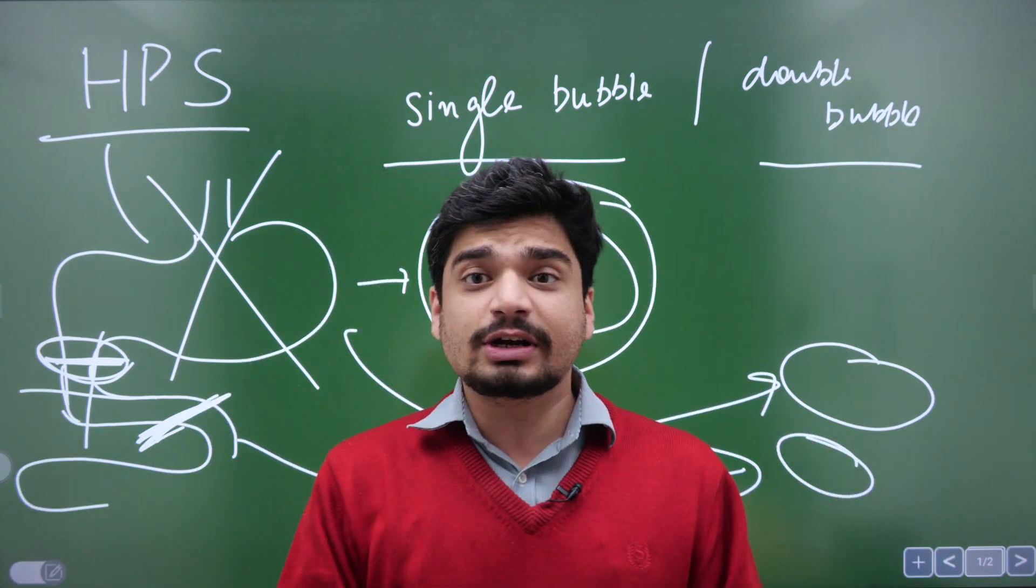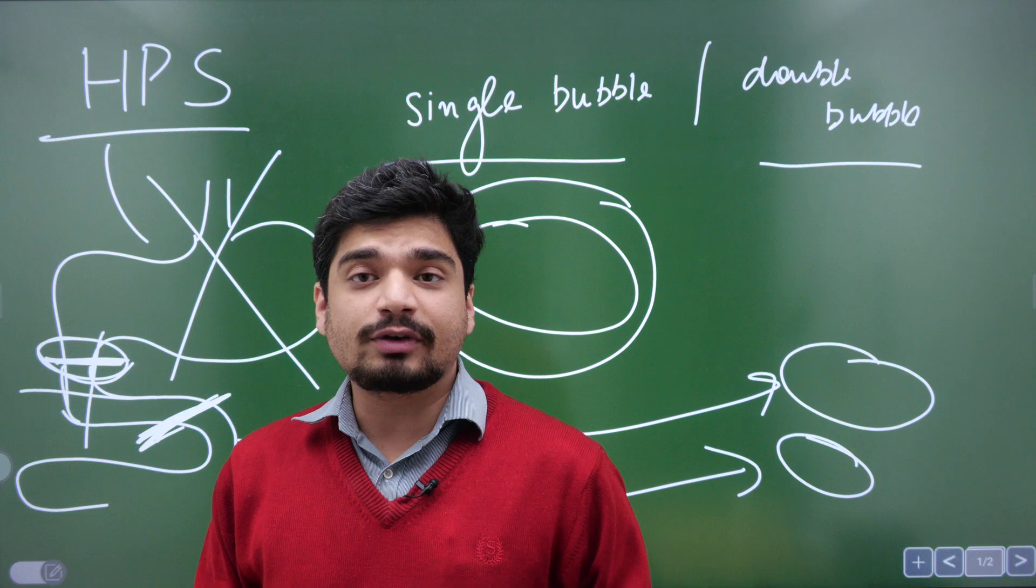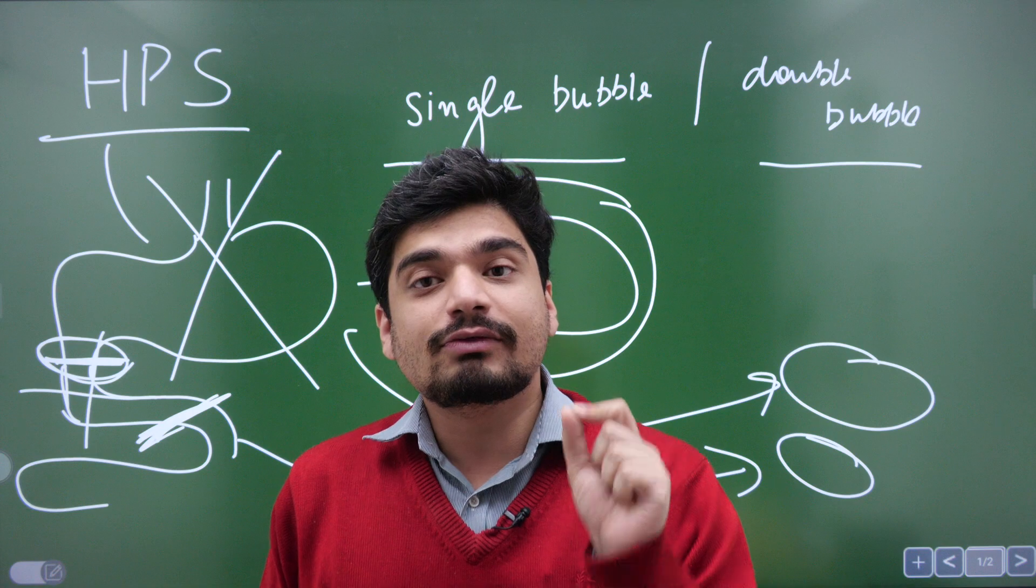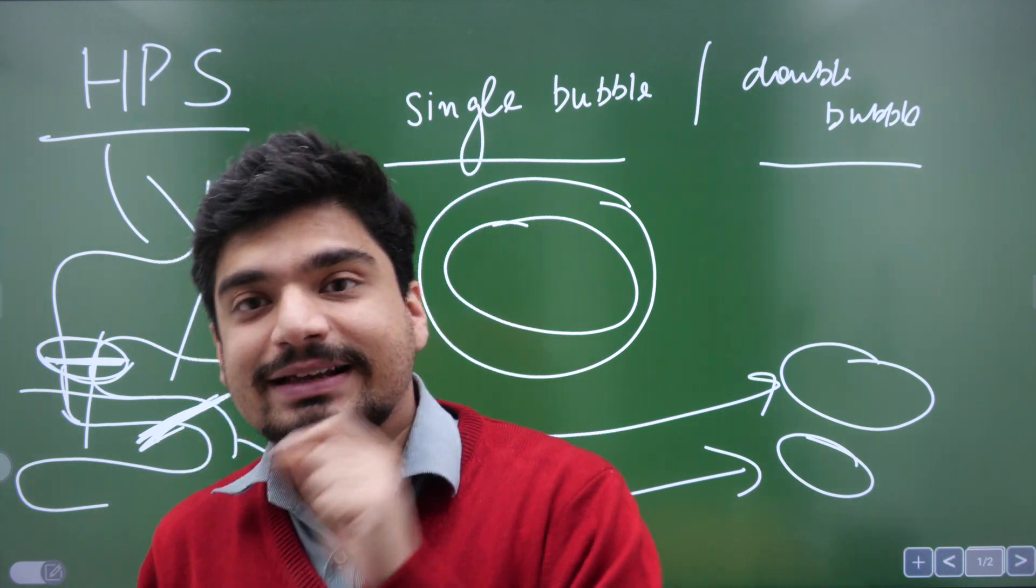So this is a very common differentiation between duodenal atresia and hypertrophic pyloric stenosis. In hypertrophic pyloric stenosis, the vomiting will be non-bilious in nature, while in duodenal atresia, it will be bilious in nature. Why?